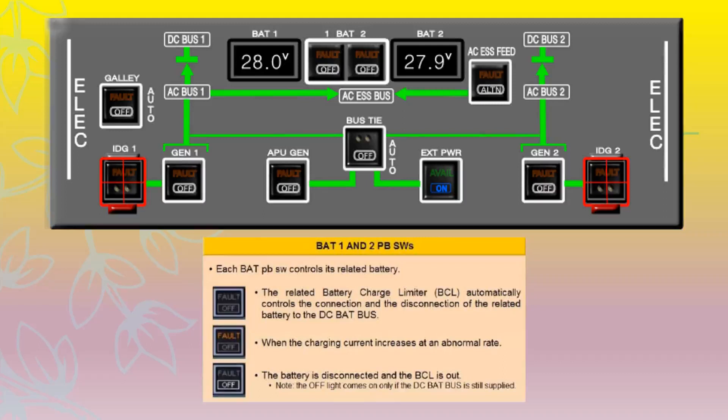The fault light comes on when the charging current increases at an abnormal rate. The off white light illuminates when the battery is disconnected and the battery charge limiter is out. The off light comes on only if the DC BAT bus is still supplied.